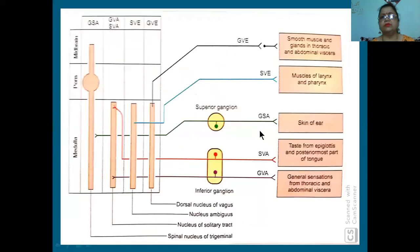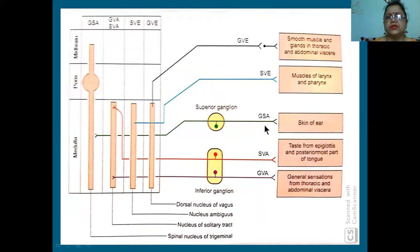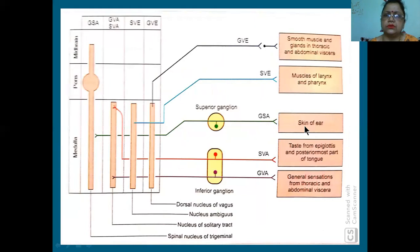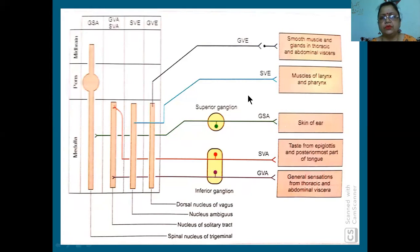The vagus nerve will come out as rootlets - about 10 rootlets. The most important part is the functional component of the vagus. In details, you learn this in physiology. Just this chart - I want everybody to take a screenshot, because this will help you immensely. If you know this chart and can draw and practice it once, you can attempt any questions.